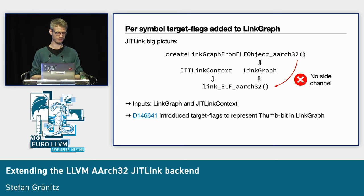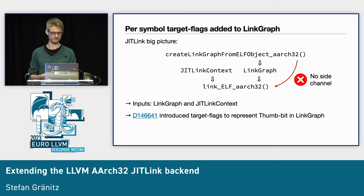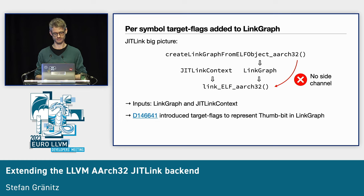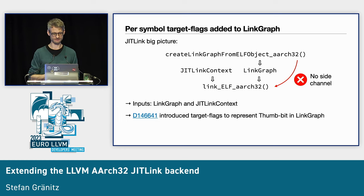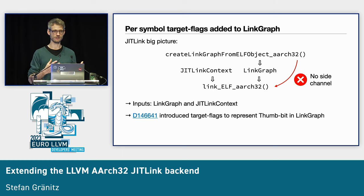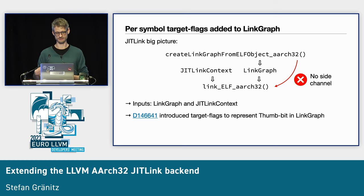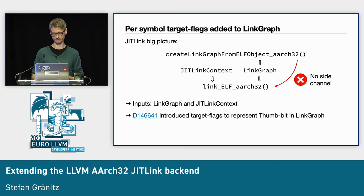Basically in JIT link, we create a link graph for the object file format and target instruction set — 'create link graph from ELF object ARCH32' here — and this link graph goes into 'link ELF ARCH32' later. The link graph is really the only thing that transports information between the two steps, so there is no side channel where we could pass this information otherwise.